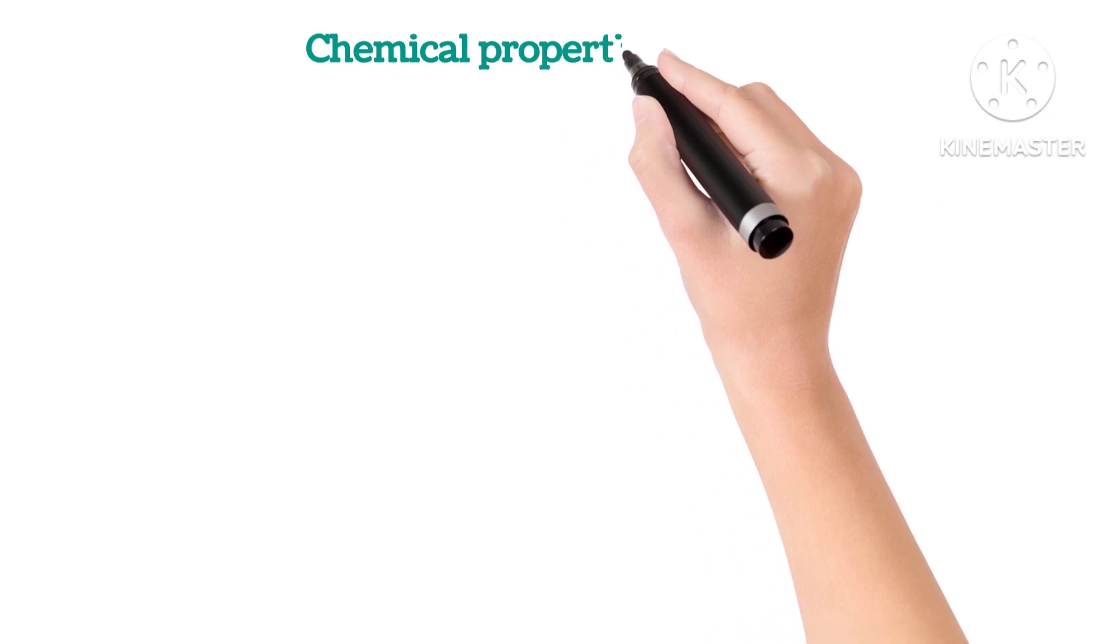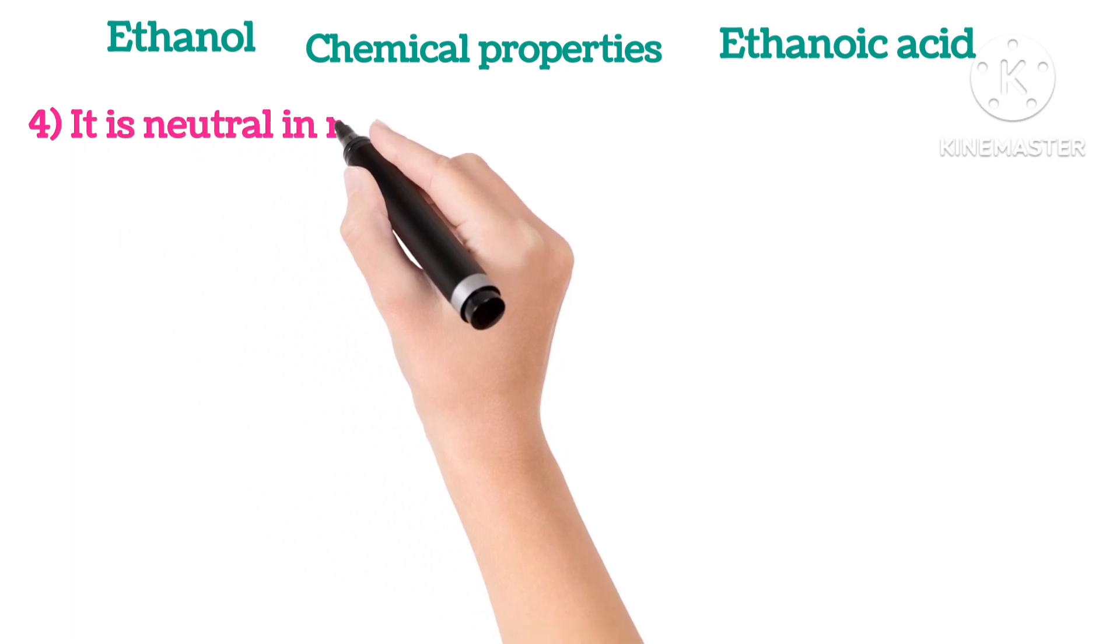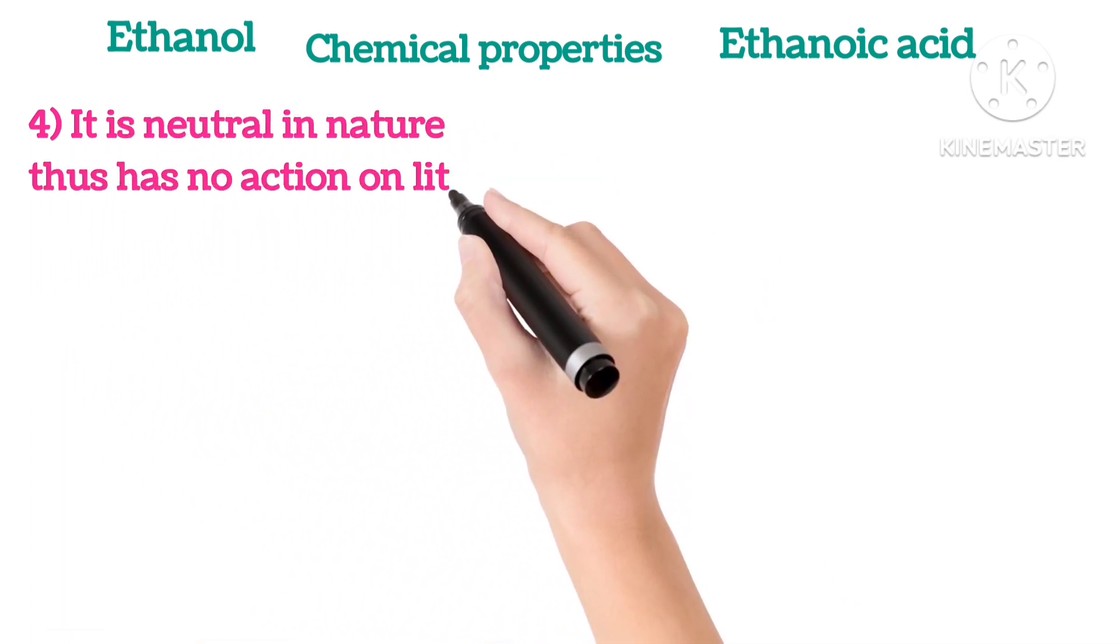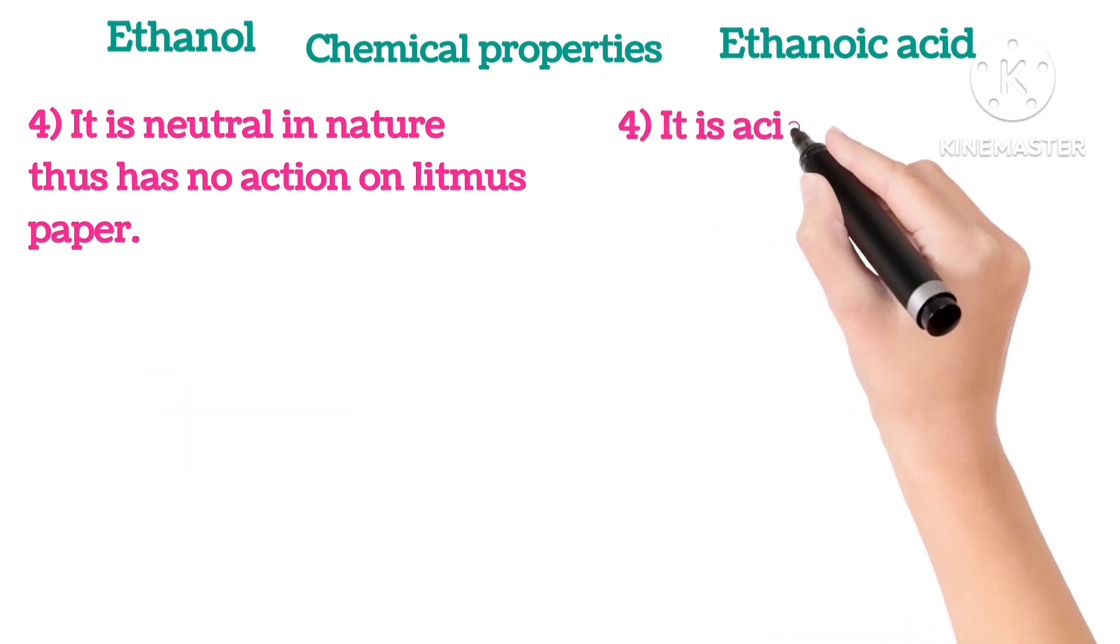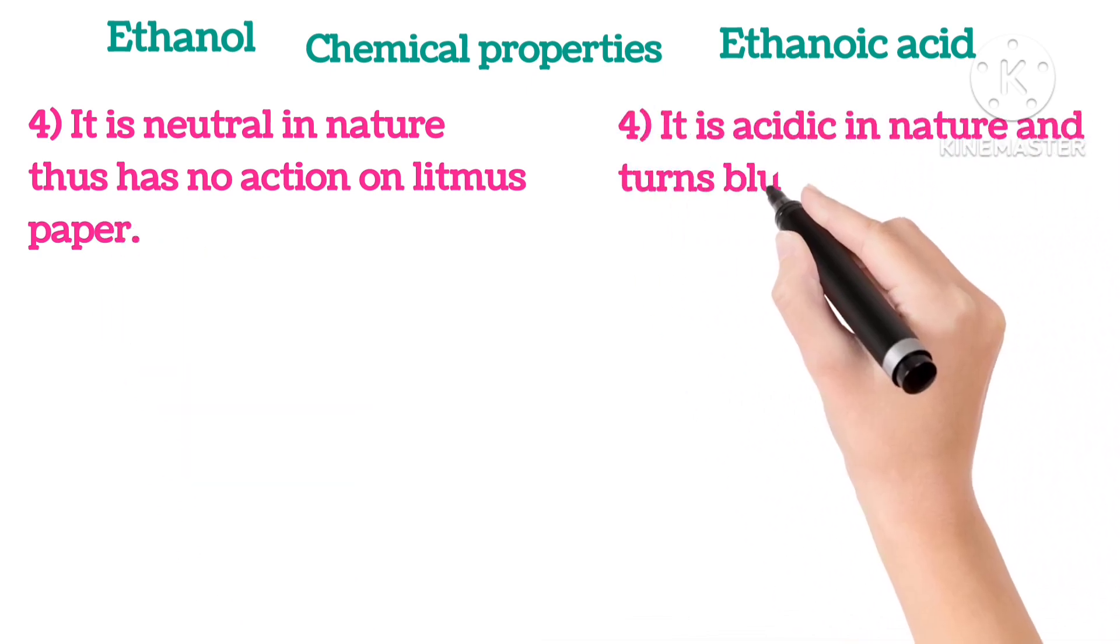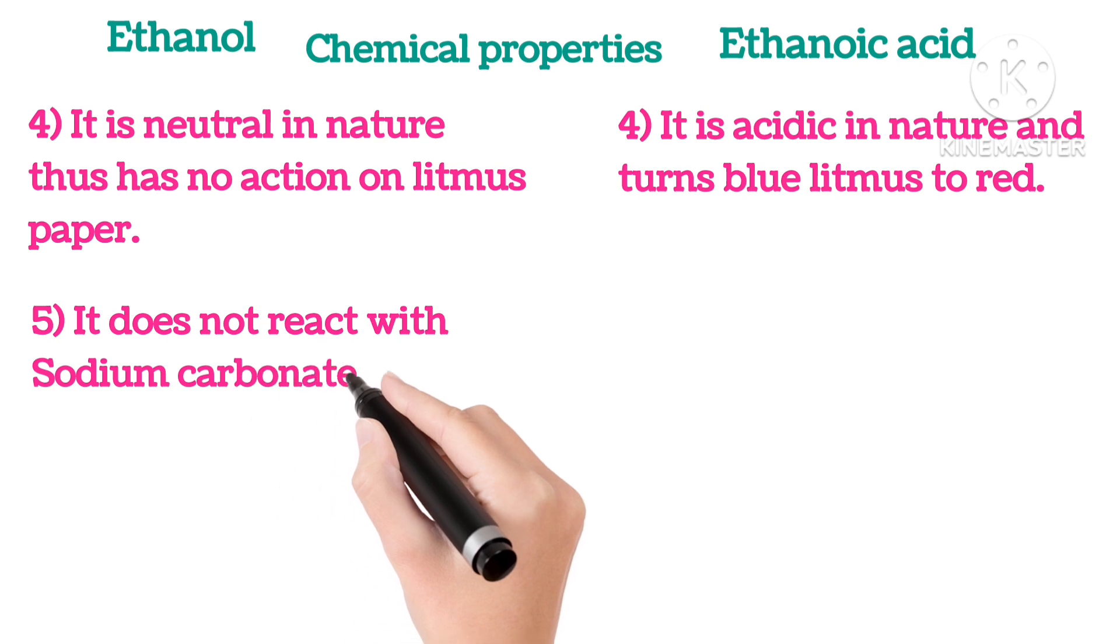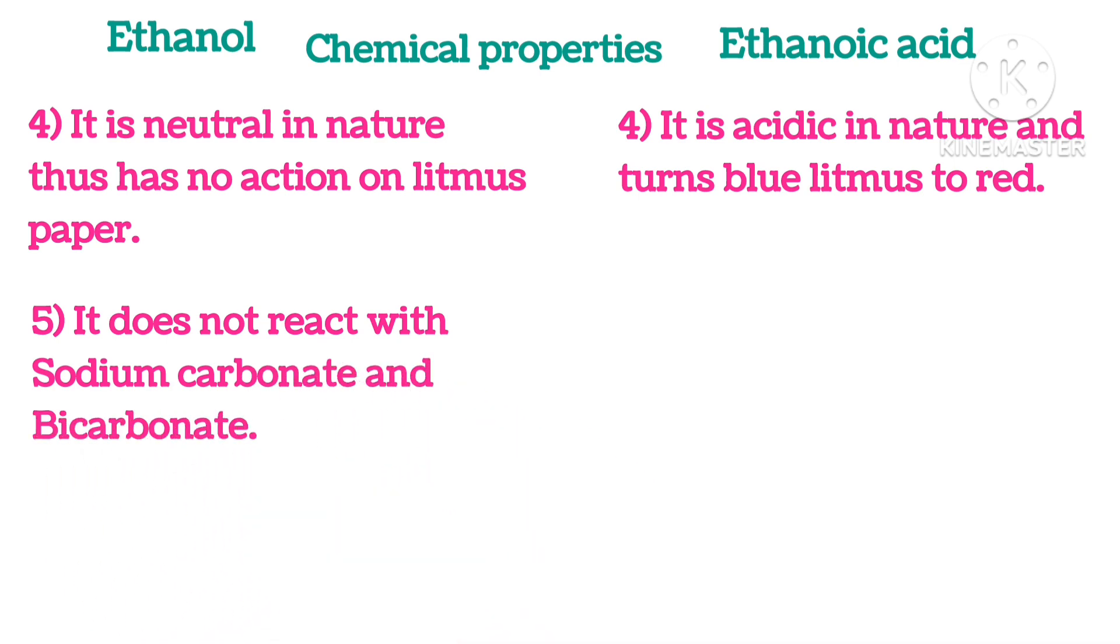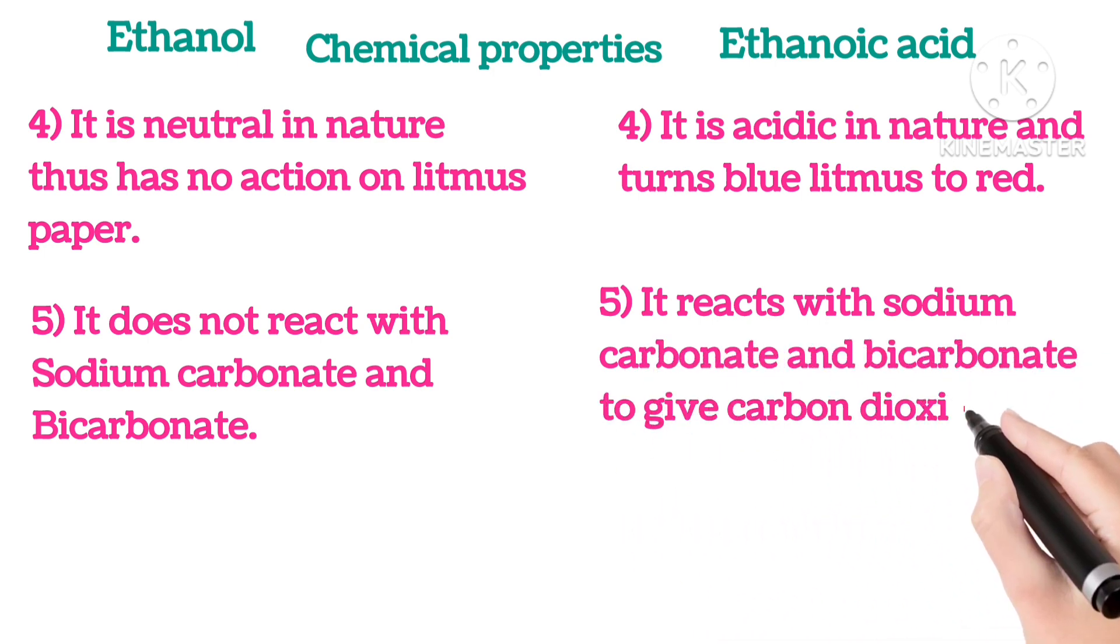Now, on the basis of chemical properties: Ethanol is neutral in nature, thus has no action on litmus paper, whereas ethanoic acid is acidic in nature, thus turns blue litmus to red. Ethanol does not react with sodium carbonate and bicarbonate. Ethanoic acid reacts with sodium carbonate and bicarbonate to give carbon dioxide.